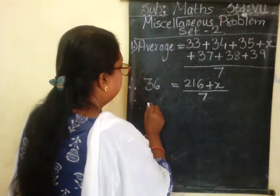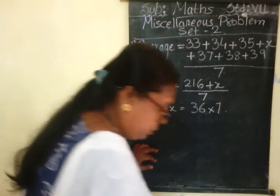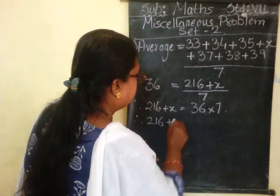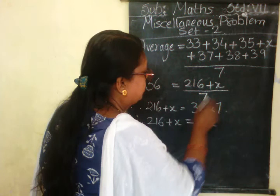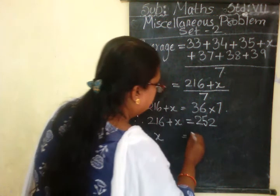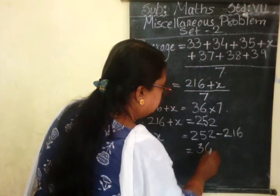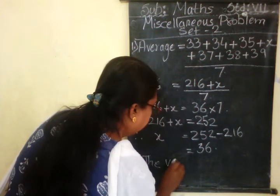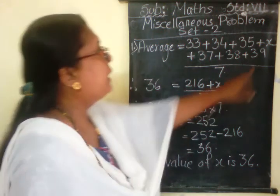Therefore, 216 plus X is equal to 36 multiplied by 7, which gives 252. Therefore X is equal to 252 minus 216, which gives us the answer as 36. So the value of X is 36.